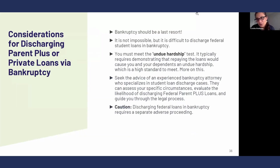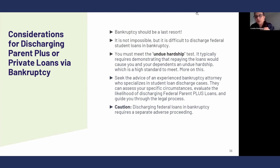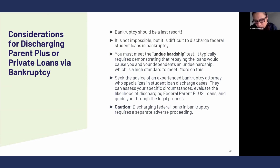What about bankruptcy? It is extremely hard to discharge both federal and private student loans — they are pretty safeguarded when it comes to bankruptcy. A borrower has to show undue hardship, meaning that you basically cannot support and maintain a very basic standard of living if you have to repay your loans, and that is a condition that has persisted, persists now, and will continue to persist in the future. Usually it's hard to discharge loans in bankruptcy because people who meet the undue hardship standard probably qualify for a $0 repayment plan. The federal government has been working with the Department of Justice to give more leeway, but it's still pretty hard. You will need to consult with a student loan bankruptcy attorney. If you're filing for bankruptcy, don't assume that your student loans are automatically part of that bankruptcy discharge — there is a different proceeding that you would have to initiate.